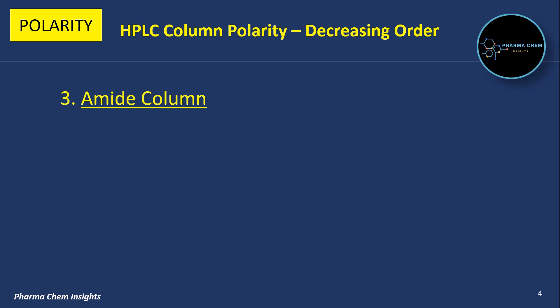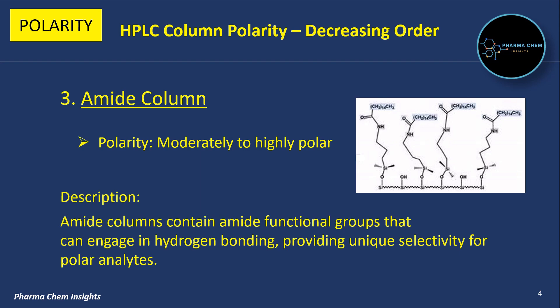Second is the Amide column. Its polarity is moderately to highly polar. Amide columns contain amide functional groups that can engage in hydrogen bonding, providing unique selectivity for polar analytes.